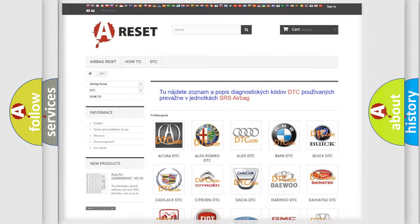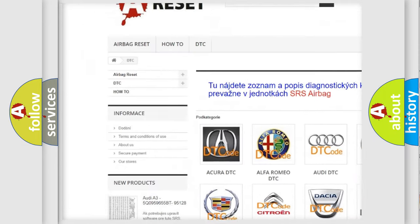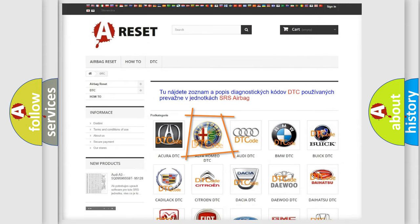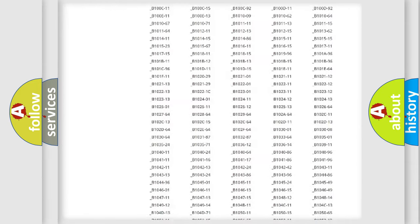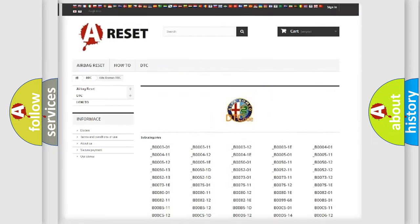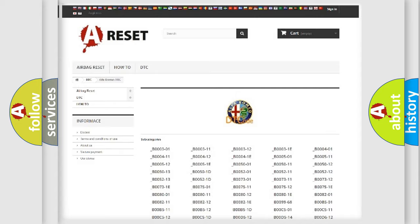Our website airbagreset.sk produces useful videos for you. You do not have to go through the OBD2 protocol anymore to know how to troubleshoot any car breakdown. You will find all the diagnostic codes that can be diagnosed in Alfa Romeo vehicles.